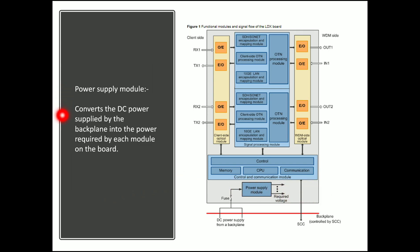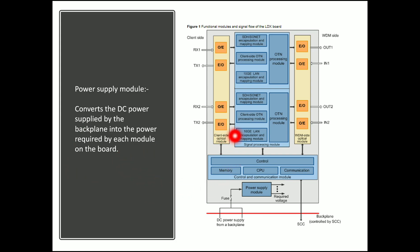The power supply module converts the DC power supplied by the backplane into the power required by each module on the board. It supplies the required power to the WDM side optical module, client side optical module, signal processing module, and all other types of modules on the board.